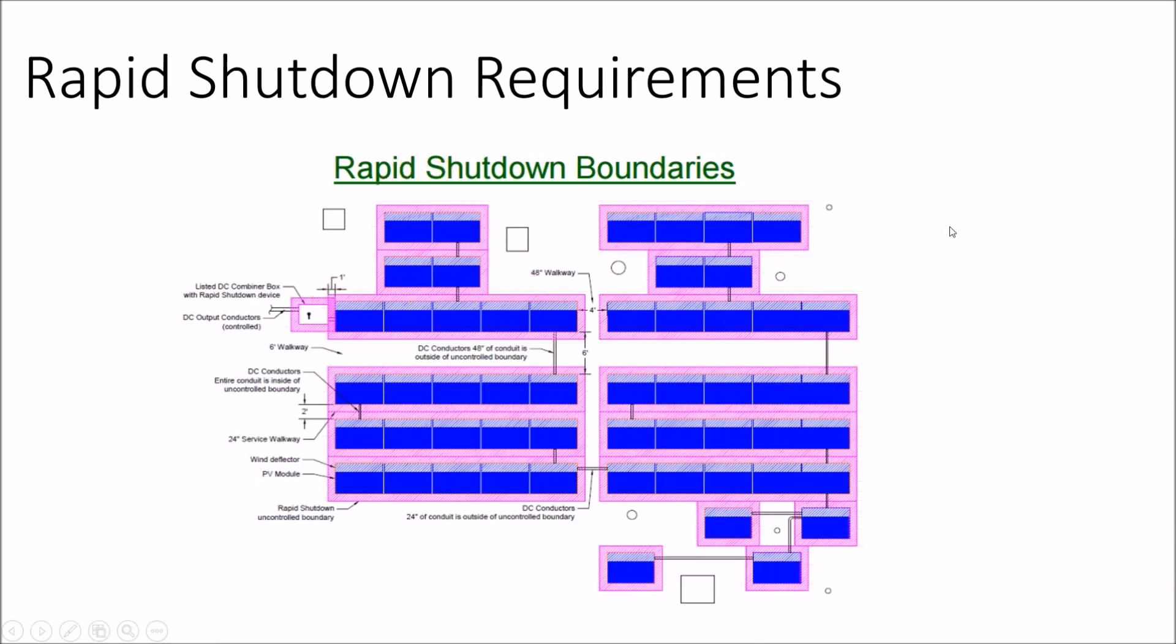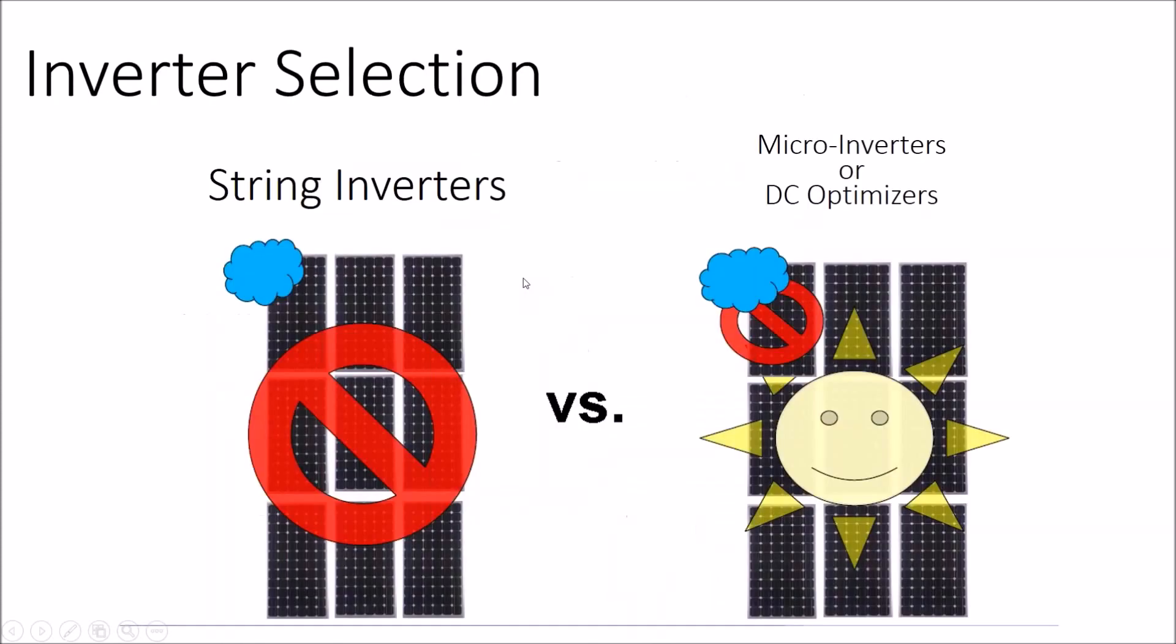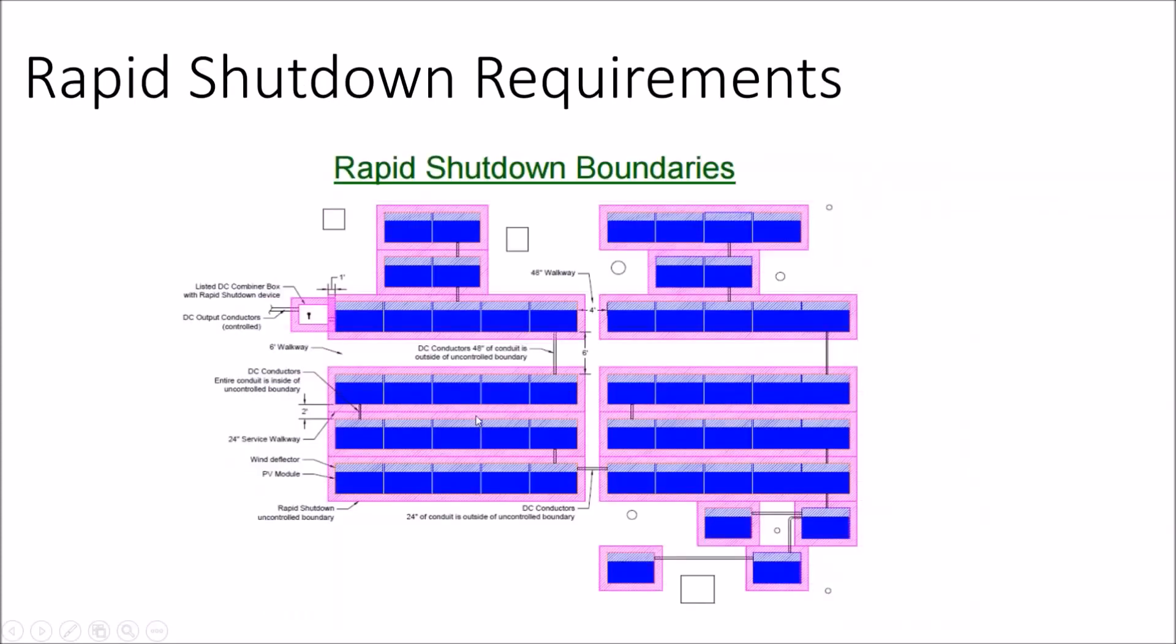By putting a SolarEdge optimizer on every other solar module, that kills the power right at the module. So SolarEdge has built-in rapid shutdown compliance. Even if there's no shade at all, the SolarEdge system is going to outperform the string inverter system simply because it's optimizing every single module on the rooftop and not just one-third chunks.